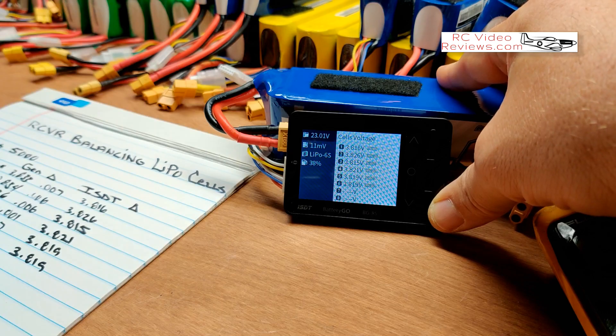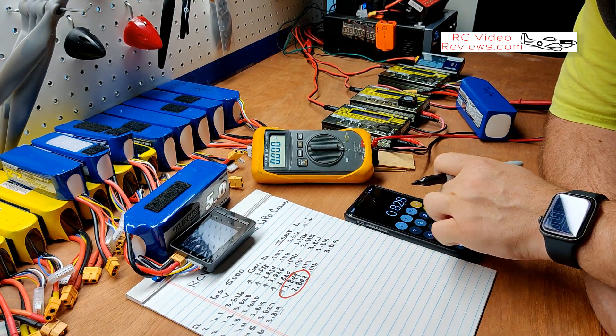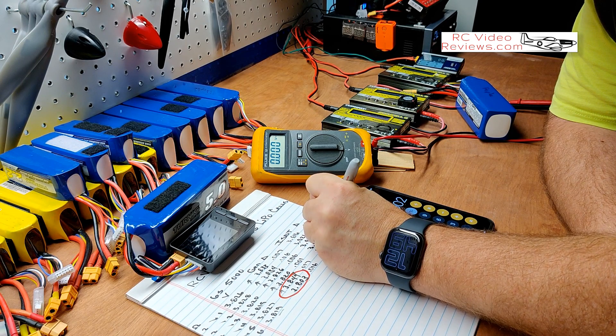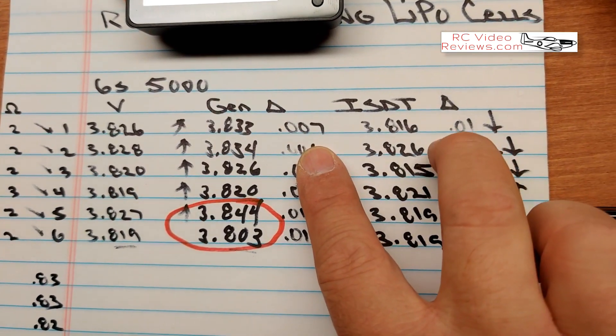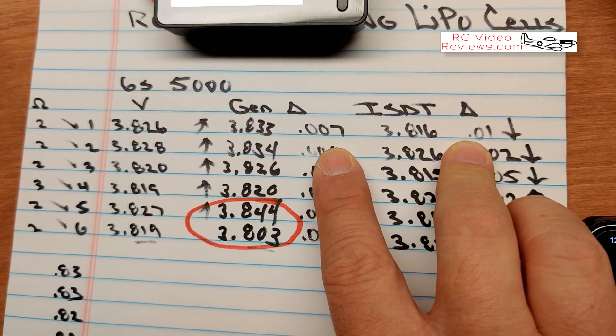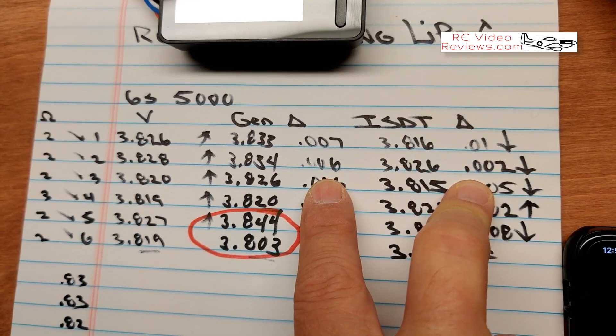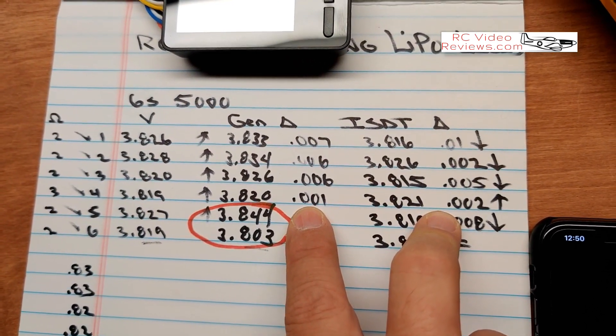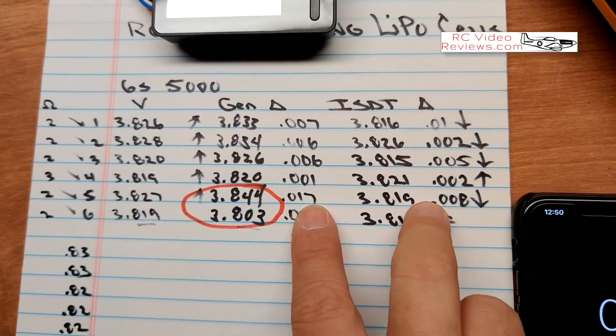All right, now let's get the calculator out and see what the differences are. 3.816, that's 3.828 minus 3.826, we've got 0.002 higher. Now if we look at the difference between the two, we can see the truth. So the generic tester, 0.007 higher against 0.01 lower, so that one was actually a closer measurement. And then after that, the ISDT pretty much got it. It was 0.002 against 0.006, 0.005, that was close. 0.001, that was actually, the generic was actually closer on the reading. How about that? Yeah, it was, by 0.001.